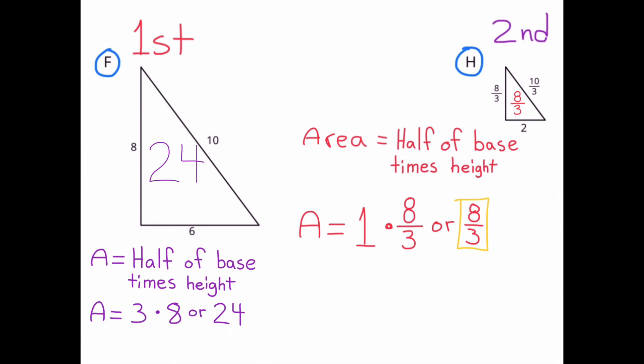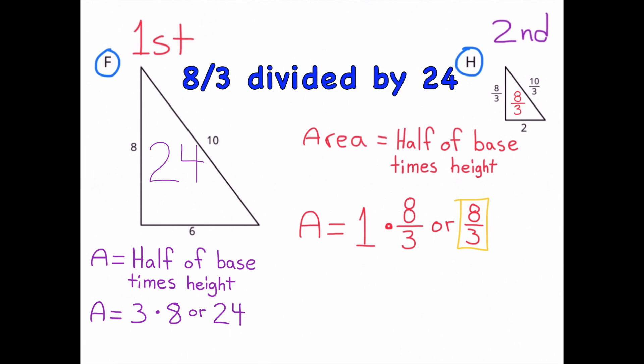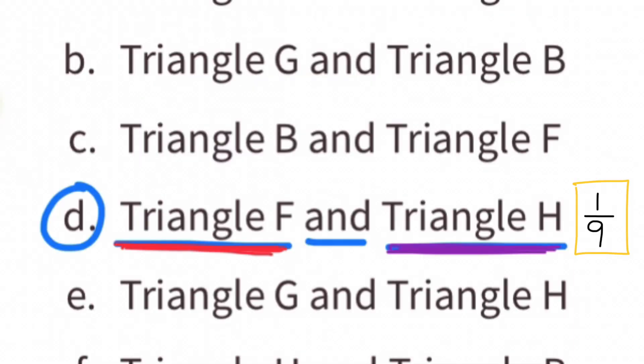Since triangle H was the second one mentioned, we're figuring out how much larger the area of triangle H is compared to triangle F. Triangle H is actually much smaller. We divide the area of triangle H by the area of triangle F: 8 thirds divided by 24, which equals 1 ninth. The area of triangle H is 1 ninth the size of the area of triangle F.